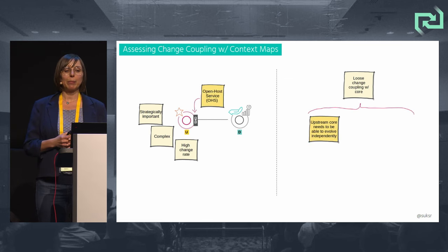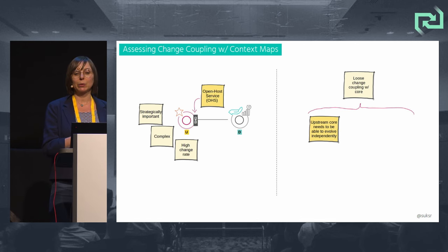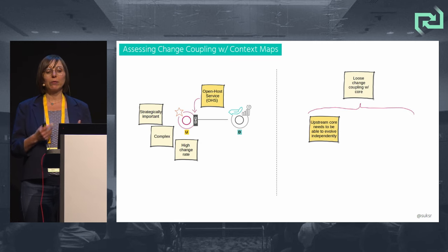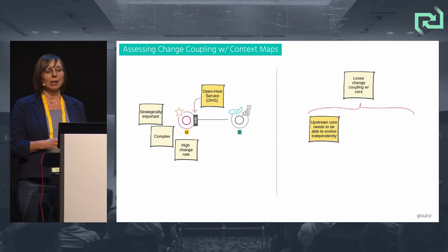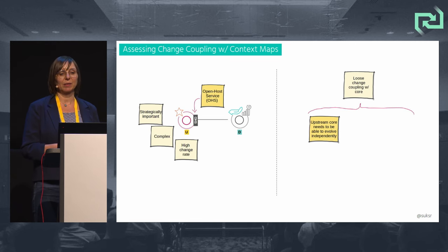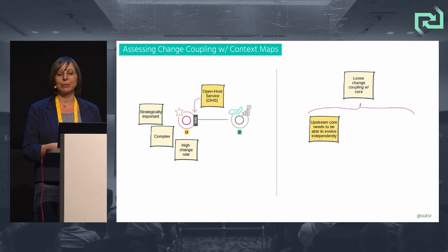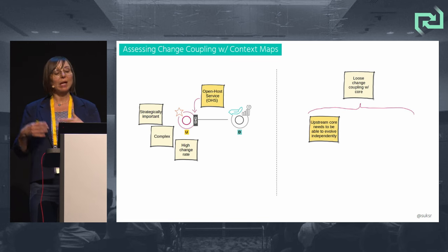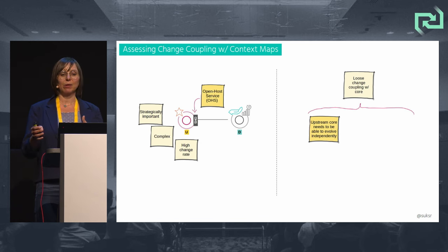To achieve loose coupling when integrating with a core domain-related bounded context, we need to ensure the core domain can evolve independently. We need to avoid exposing internal core domain internals to the outside — instead we establish translation and transformation mechanisms. The context map pattern of Open Host Service provides a public API to multiple downstream consumers, translating and transforming the internal domain model to the external API, so the internal domain model can evolve independently from its API.